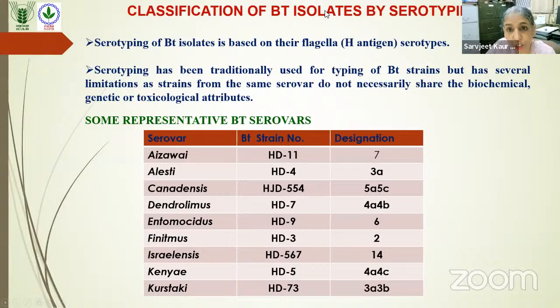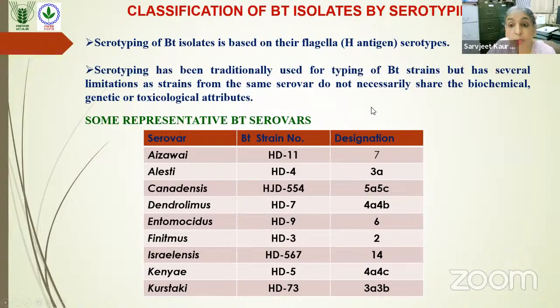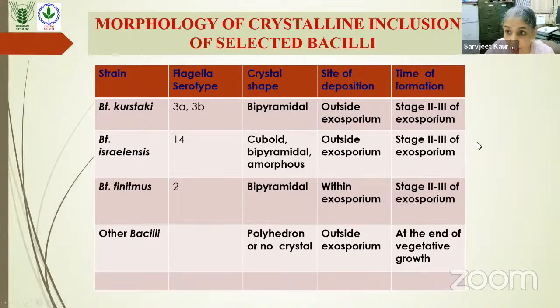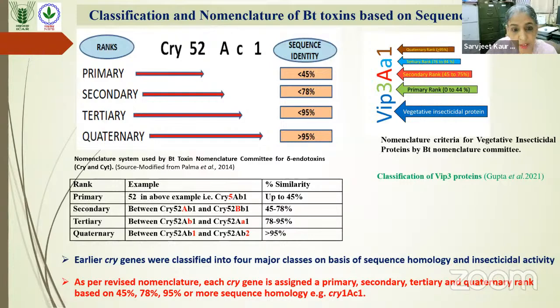The initial classification of Bt isolates was by serotyping based on their flagellar H-antigen serotypes, with different serotype names and designations. However, this had several limitations, as strains from the same serovar had different biochemical and toxicological attributes. Regarding morphology, crystals can be bipyramidal, cuboid, or amorphous, and some Bt strains were classified on this basis. As more genes have been discovered, a new nomenclature system based on four ranks of classification has been adopted.